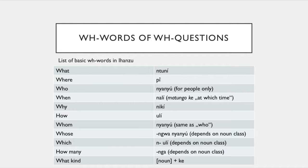Here's a list of WH question words in Ihanzu — this is the basic list I found, also taken from the archive material. Some are very simple, like 'what' — we've seen this in Elizabeth's presentation — with 'ntuni', and 'where' is 'pi'. Some have other versions, like 'nali' has 'matungo ke' for 'at which time'. And at the bottom, 'whose', 'which', and 'how many' are the ones that change depending on the noun class.